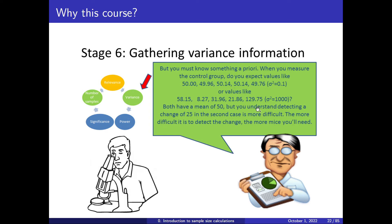Finding a change of 25 in the low-variance situation is extremely easy — with just one animal you can see it. If the control fluctuates with variance 1000 and the drug drops the area to 25, it is much more difficult to detect, because even in the control group there are animals already below 25. So it is much harder to detect a change of 25 in the high-variance group.